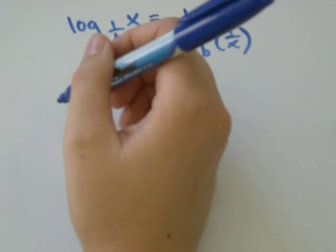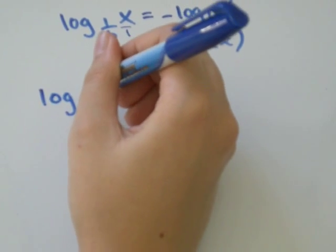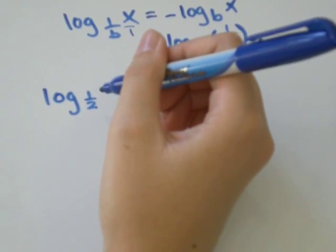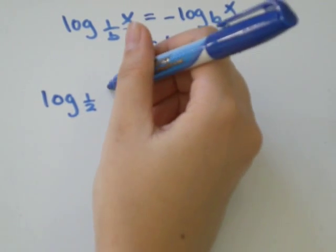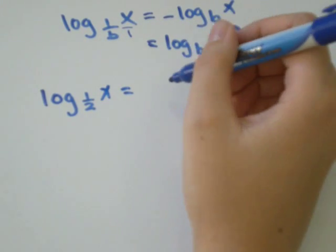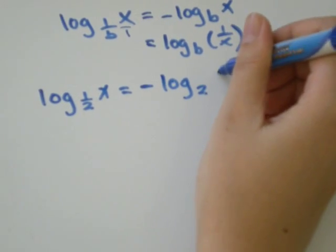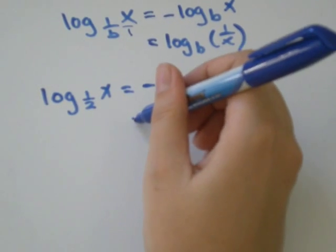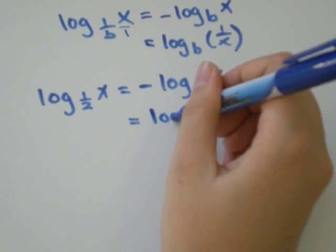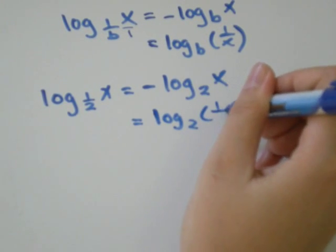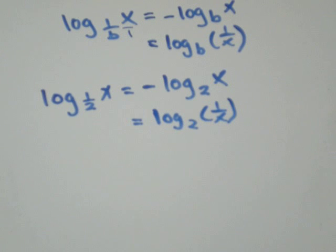So let's do an example. If we have log base 1 over 2 of x, that's the same as negative log 2 of x, and it's also the same as positive log 2 of 1 over x.